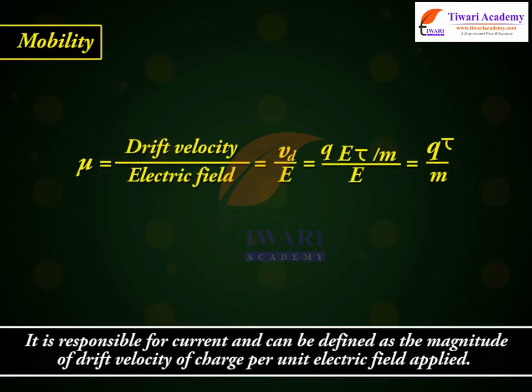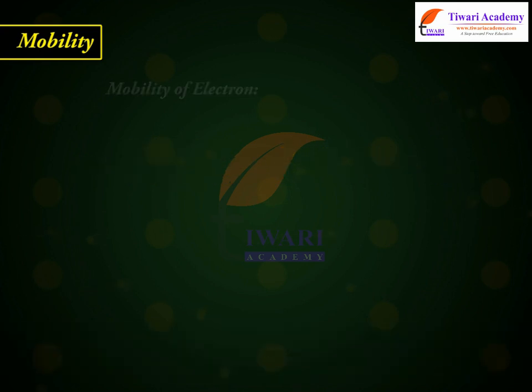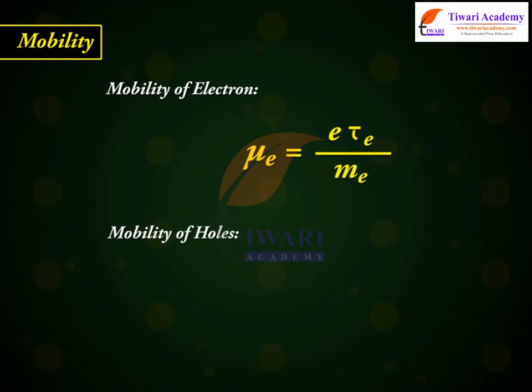Mobility. It is responsible for current and can be defined as the magnitude of drift velocity of charge per unit electric field applied. That is, mu e is equal to e tau e by m e, mobility of holes, mu h is equal to e tau h by m h.